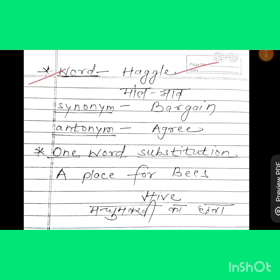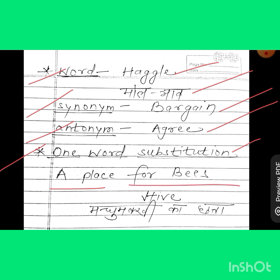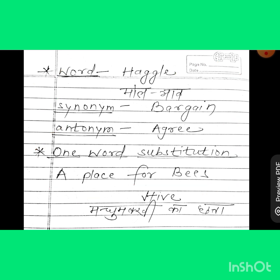In the next slide, we have a vocabulary word: 'haggle', which means 'mol-bhaav' in Hindi. The synonym of this word is 'bargain', and the antonym is 'agree'. We also have a one-word substitution: a place where bees live is called a 'hive' — its meaning in Hindi is 'madhumakkhi ka chhatta'.